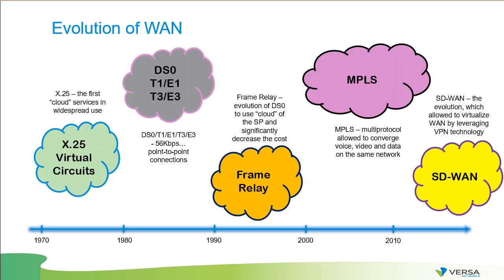Evolution of the WAN. In the 70s and 80s, the most popular WAN service was X.25 connections. It can be considered the first cloud service in widespread use. It was replaced by DS0 lines, which could form T1/E1 links depending on the number of DS0 lines combined together. Usually it's a point-to-point connection that was provided by the telecom service provider.